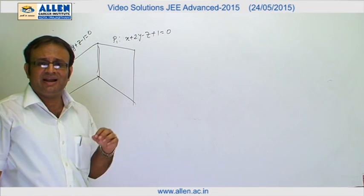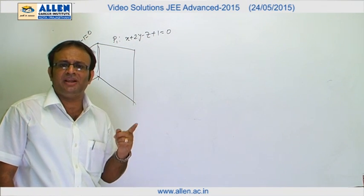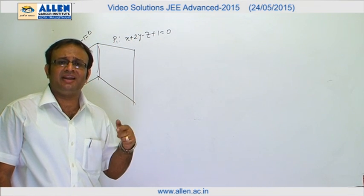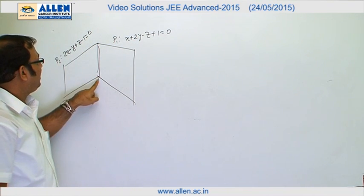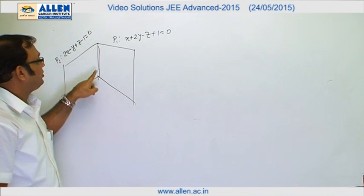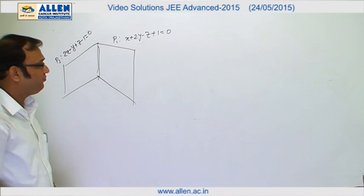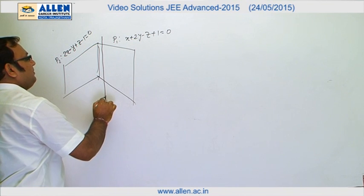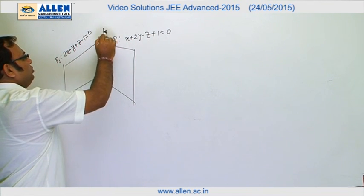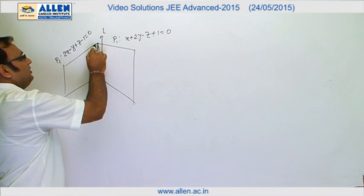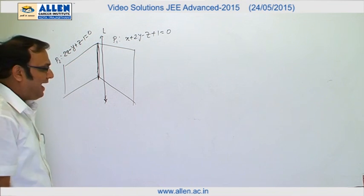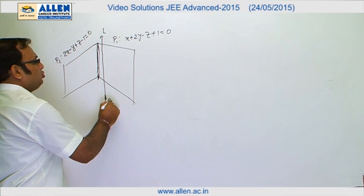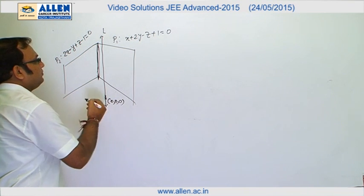Since line L is parallel to both plane P1 and plane P2, the line L must be parallel to the line of intersection of P1 and P2. The line is also supposed to pass through the origin (0, 0, 0).